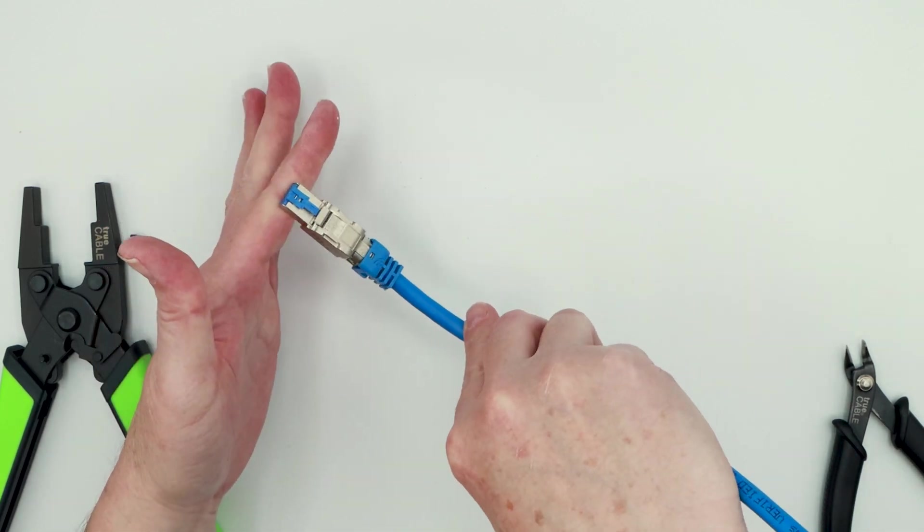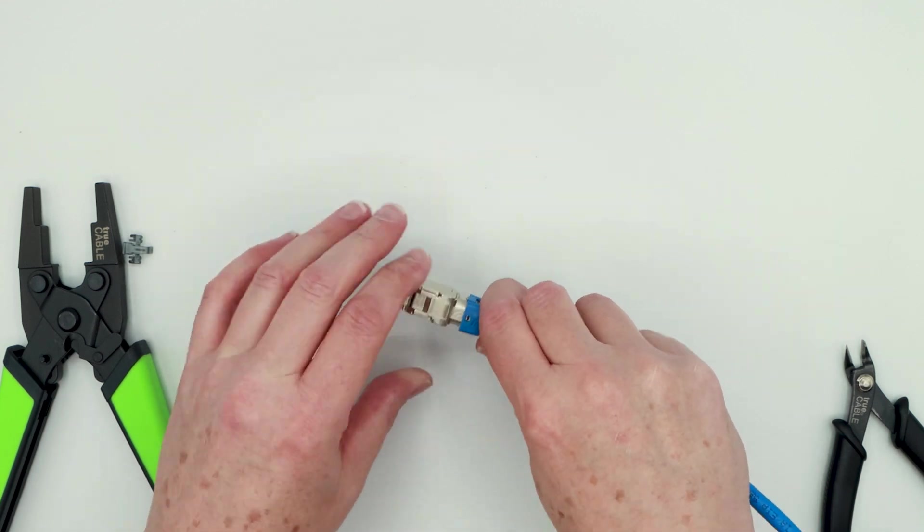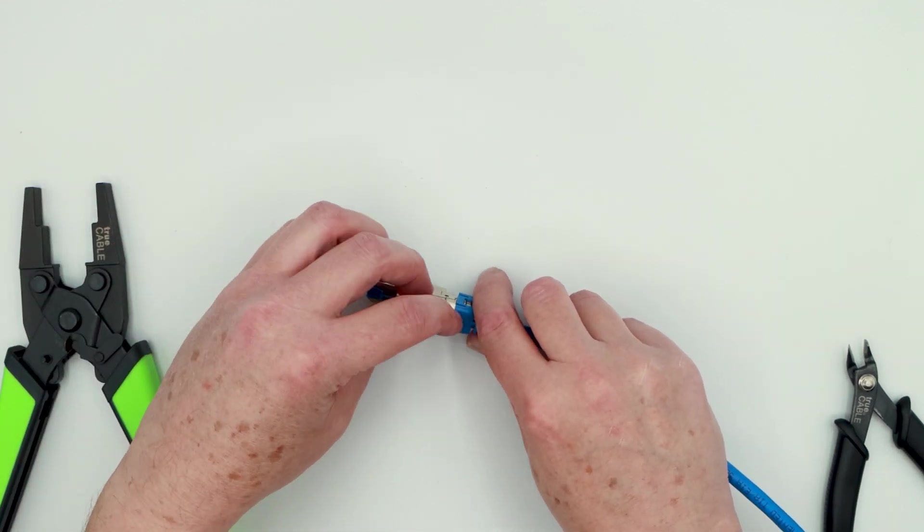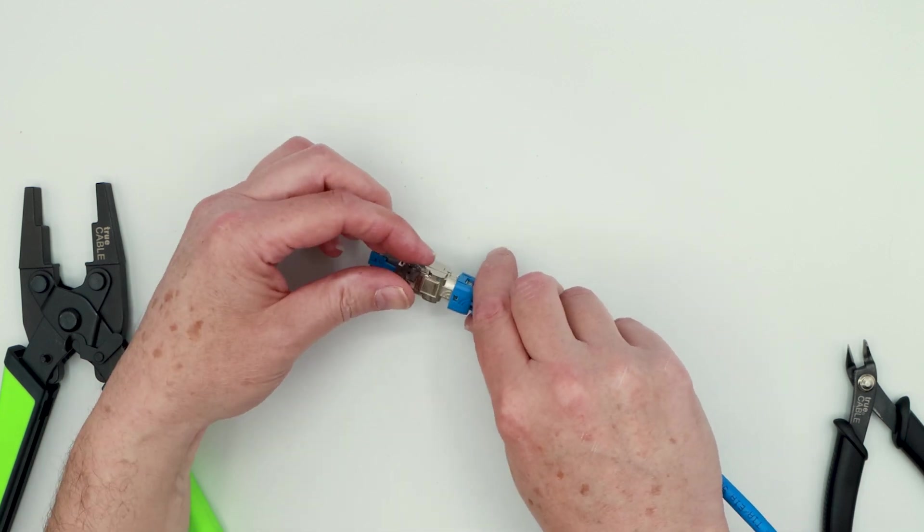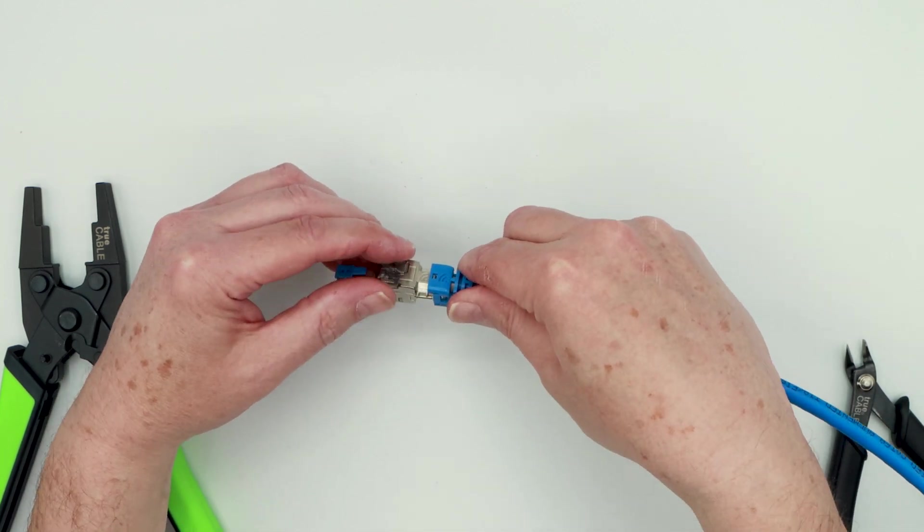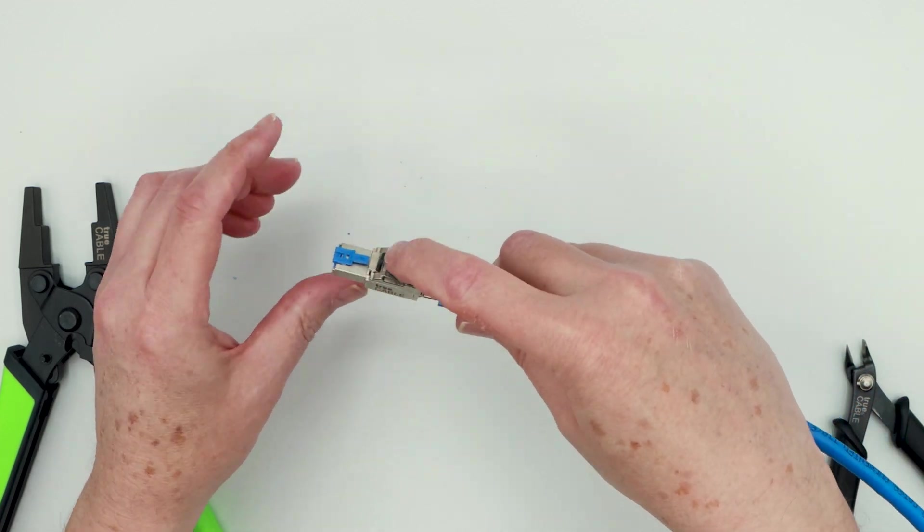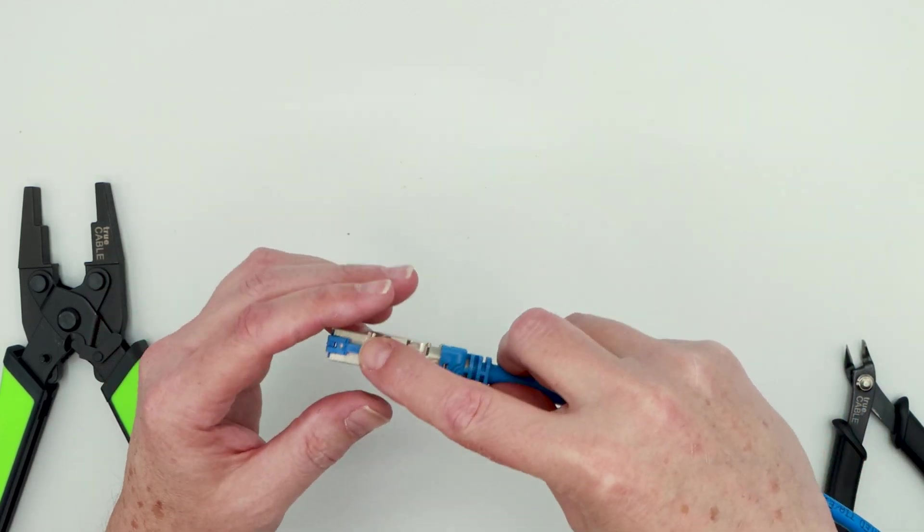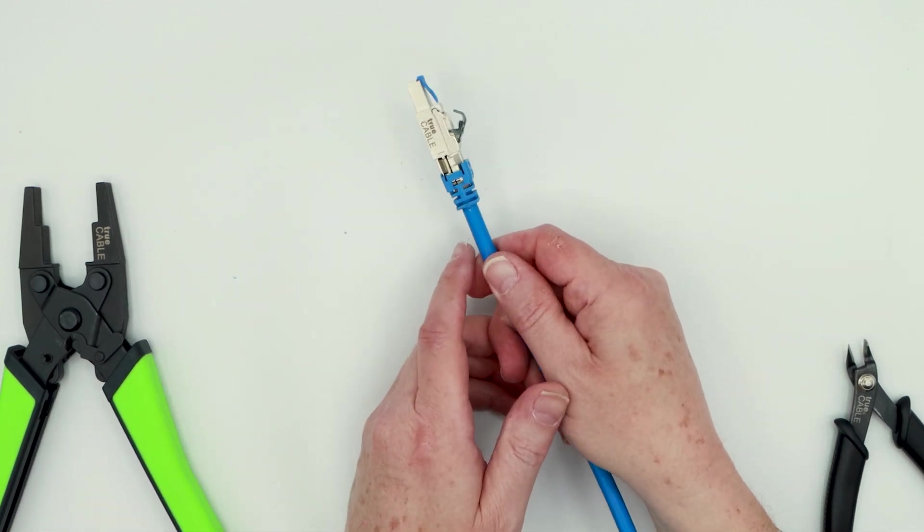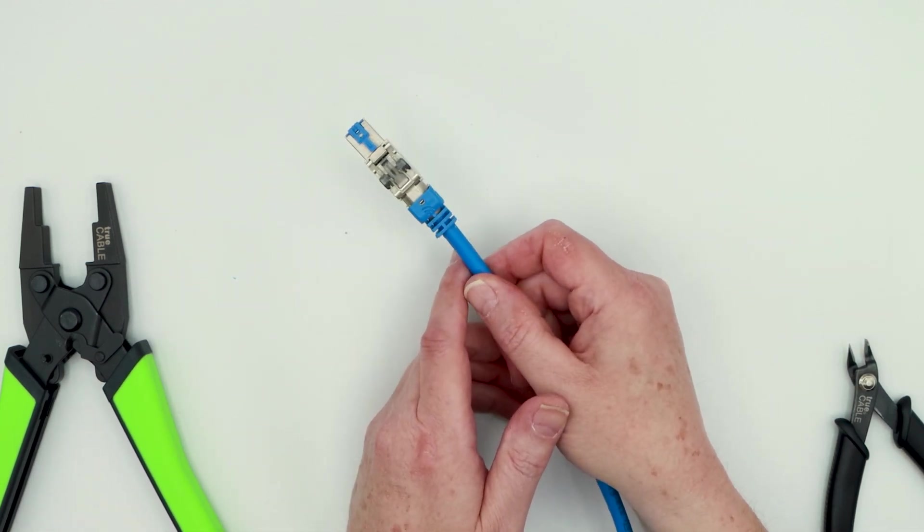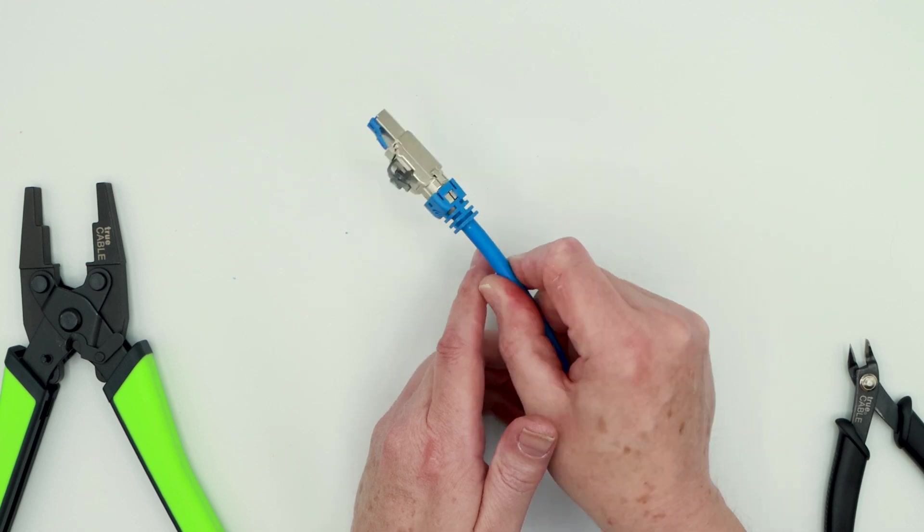And now you've got a good strain relief on there, and this is closed and it's terminated. And now you can go ahead and put your sliding latch back on. So just put on one side, and then hinge and put it on the other side. Now it's sliding back and forth again like it should. So there you go. That is a completed shielded field termination plug terminated onto Category 6A shielded riser.